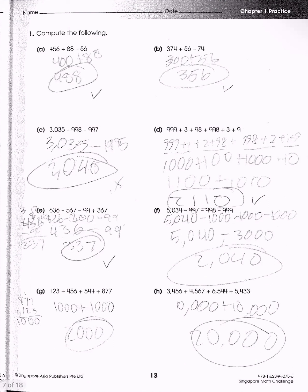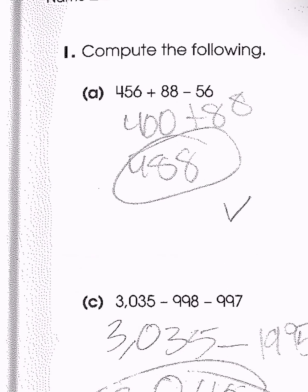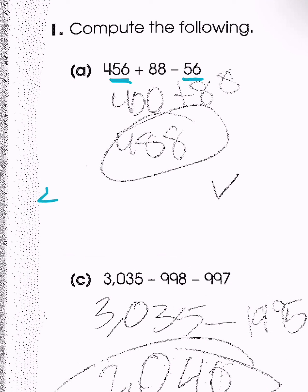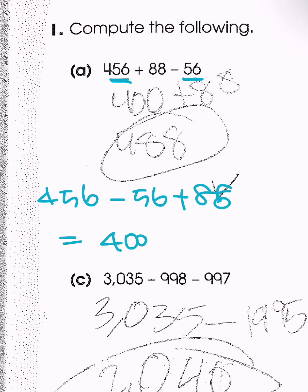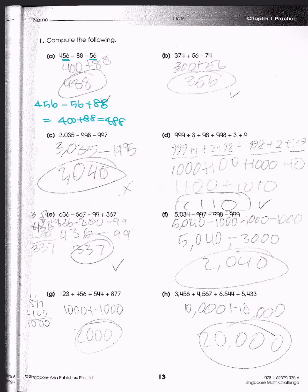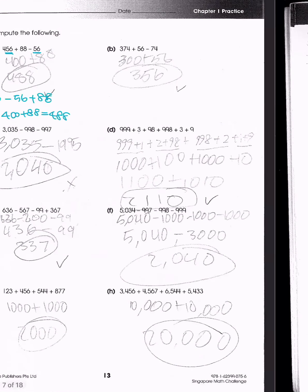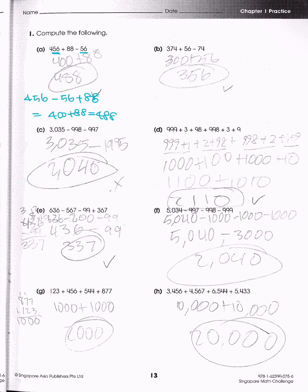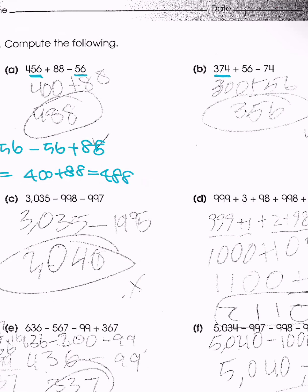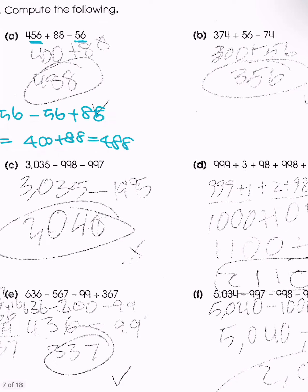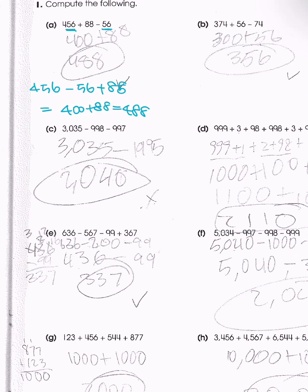Now we'll move on to some practice problems. For problem A, since 56 is repeated, we rearrange to 456 minus 56 plus 88, which gives 400 plus 88 = 488. For problem C, these two operations give minus 1, so that gives us 3,034.